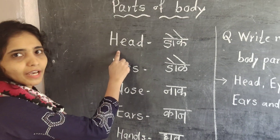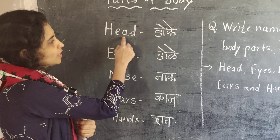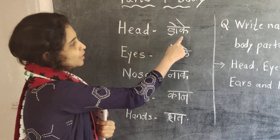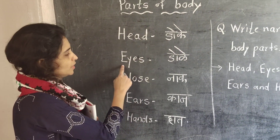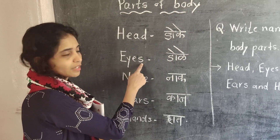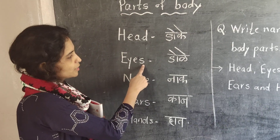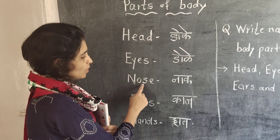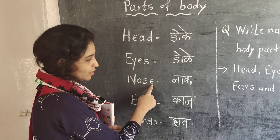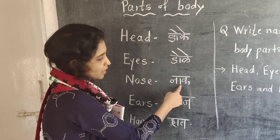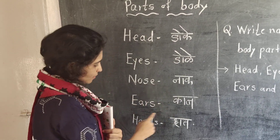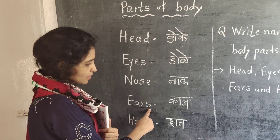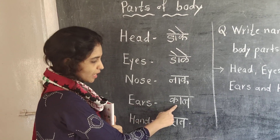See here. Head — head manje doke. E-Y-E-S, eyes — eyes manje doke. N-O-S-E, nose — nose manje neck. E-A-R-S, ears — ears manje kan.